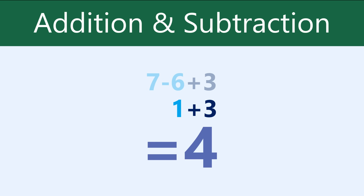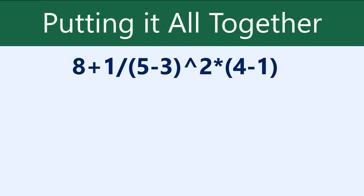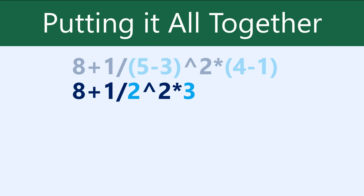Okay, now let's put them all together. This formula may look really complicated, but we're just going to go step by step through the order of operations, and you'll see that it's really not that bad. We'll start with the parentheses. We'll calculate each of these to get 2 and 3, and as you can see, the formula's already starting to look a bit simpler.